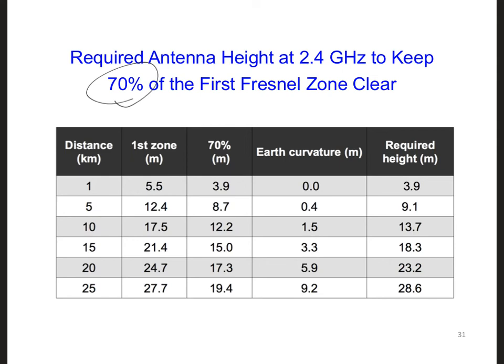This table shows the required antenna height for different link distances. The first column lists the distances between the antennas, so we're at 15 kilometers. The second column gives the radius of the first Fresnel zone. The third column lists the radius required to keep 70% of that Fresnel zone open. And the fourth column gives us the additional height that we need to add on in order to account for the Earth's curvature.